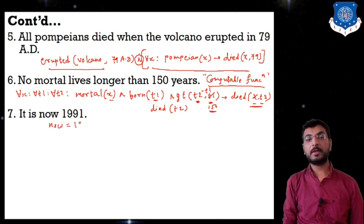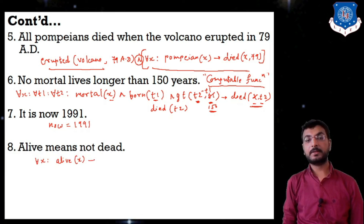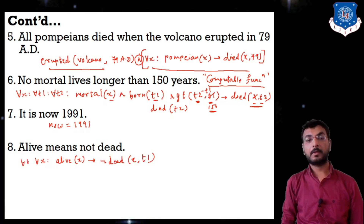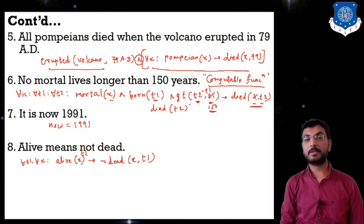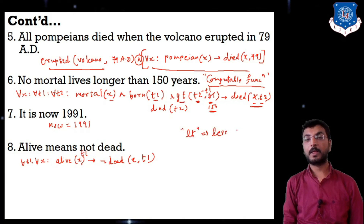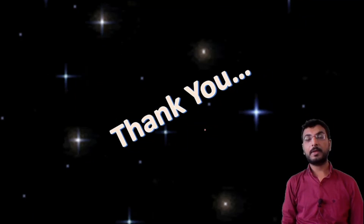Seventh: 'It is now 1991' — represented as now = 1991. 'Alive means not dead' — for all x, if x is alive at time t1 then x is not dead at time t1. These are the computable functions using gt (greater than) and likewise lt (less than). Thank you for paying your attention, students.